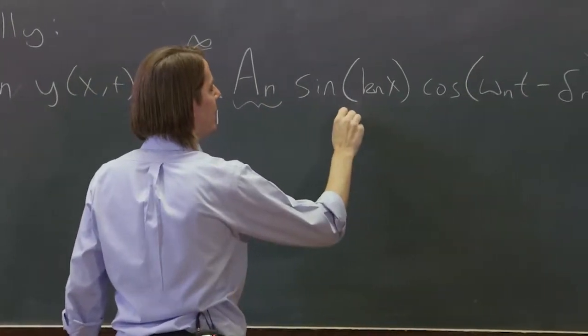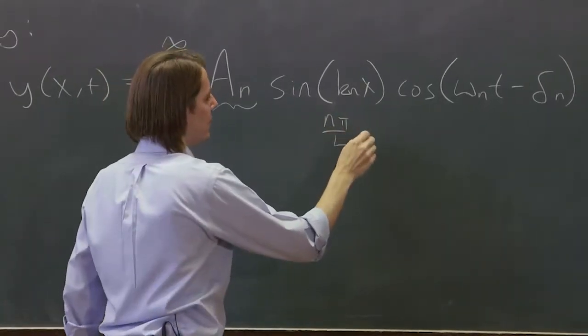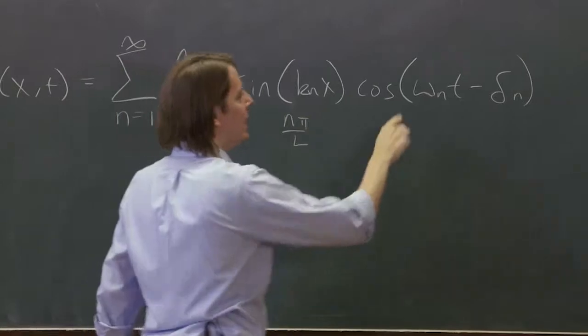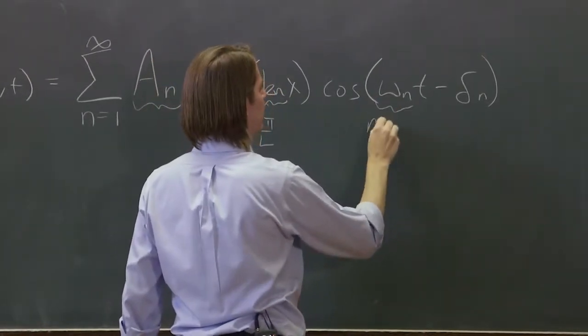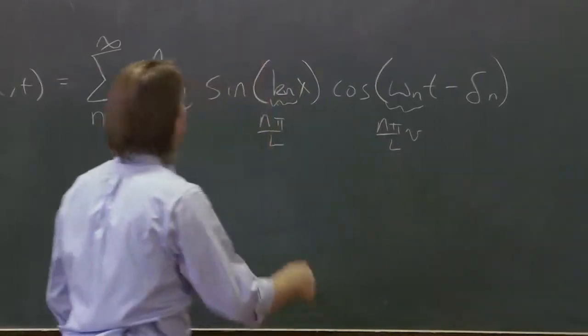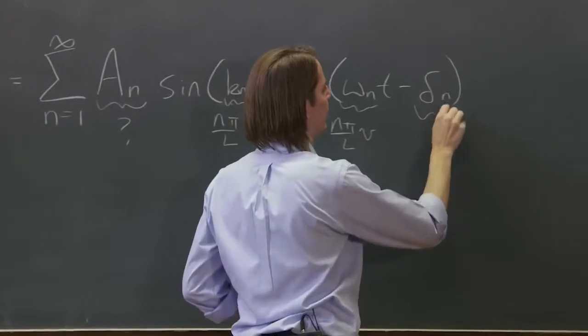We know that's n pi over l, and omega is n pi over l times v, and we know what sine and cosine are, so this we don't know, and actually the phases we don't know.